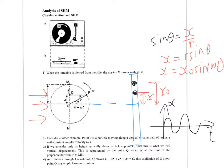A shortcut to remember: at t = 0 you start from the middle with x = 0, then move up. If you plot x versus t starting at zero and moving up, you get a sine graph — so the equation must be a sine function. This common sense approach helps you identify the correct equation without deriving from circular motion.